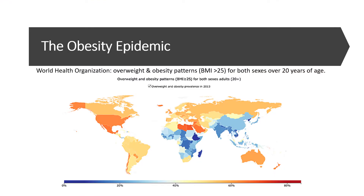This slide features an infographic displaying the obesity epidemic throughout the world. As you can see, in North America, Europe, and parts of the Middle East, there's a much higher obesity rate. A major contributor of this is the high sugar intake featured in the Western diet.